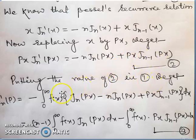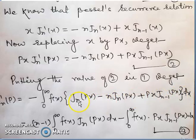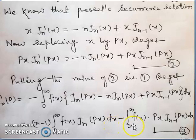Putting the values of equation 2 into equation 1, equation 1 becomes: fn'(p) = -∫₀^∞ f(x) * [jn(px) + (-n*jn(px) + px*j_{n-1}(px))/x] dx, which simplifies to: fn'(p) = (n-1)∫₀^∞ f(x)*jn(px) dx - p∫₀^∞ x*f(x)*j_{n-1}(px) dx. This is equation 3.